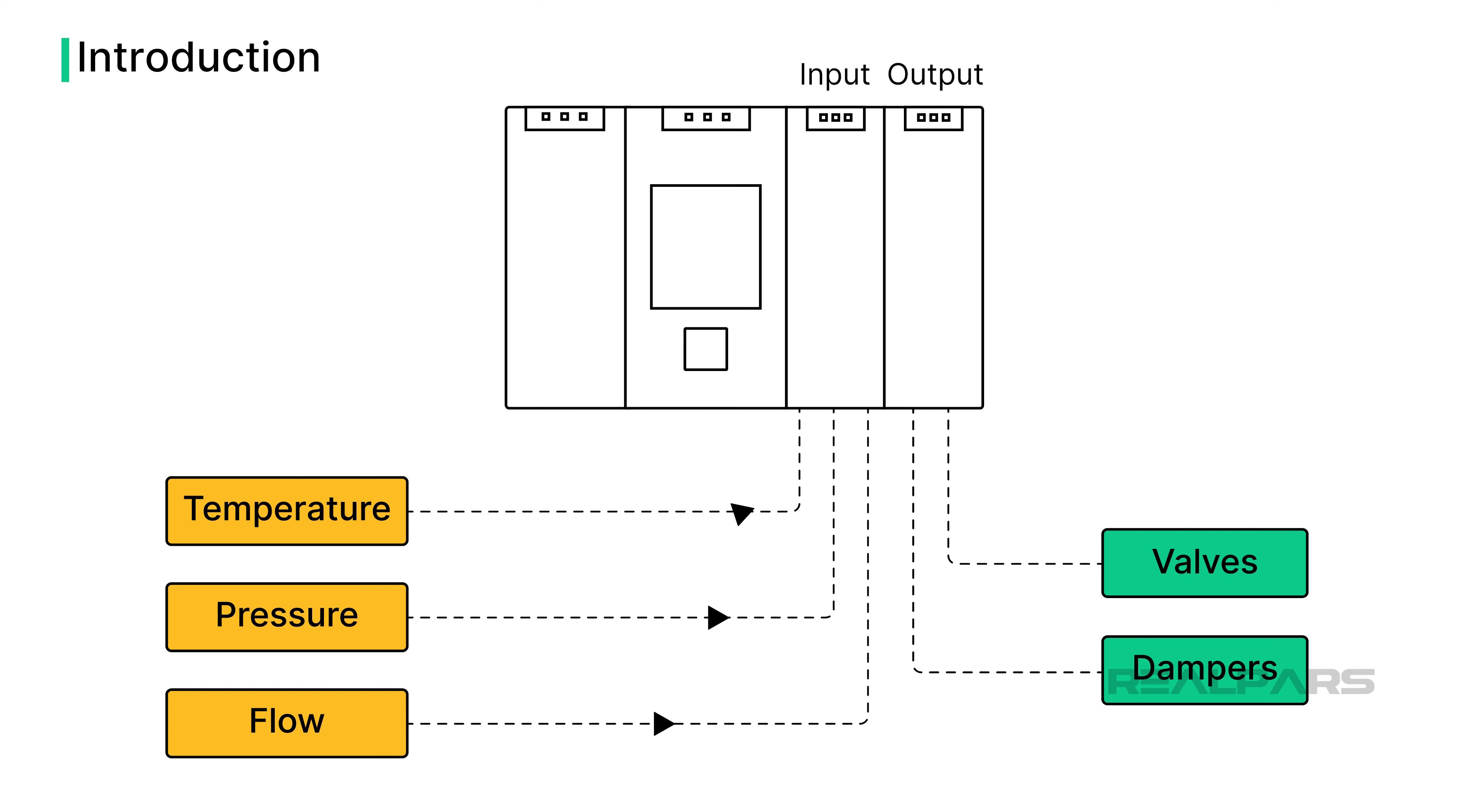Programmable logic controllers receive and transmit analog signals intended to perform various tasks. PLC inputs routinely handle analog signals representing variables such as temperature, pressure, and flow. PLC outputs produce analog signals controlling final actuators such as valves and dampers.